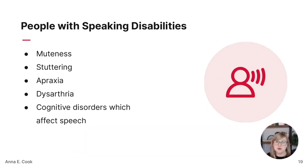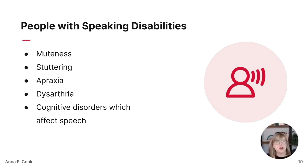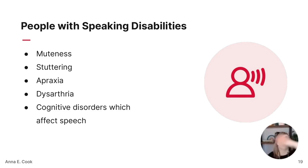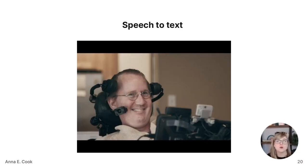We also want to be mindful of people with speaking disabilities, including muteness, stuttering, and other disabilities that affect speech. A lot of interactions here focus on voice interfaces and ensuring our voice detection tools can work with people who have speaking disabilities. This relates heavily to voice UI and conversational UI — that could be a whole other talk. Captions can also be very helpful here. This is Google's Project Euphonia, which focuses on rendering speech to text for people with speaking disabilities.